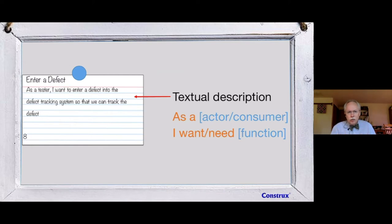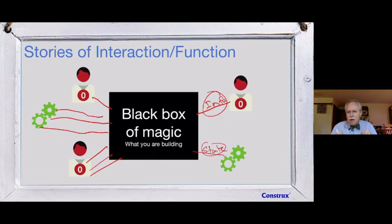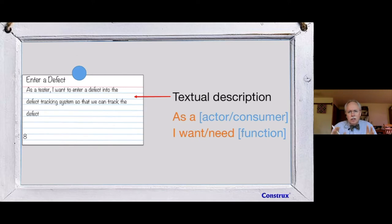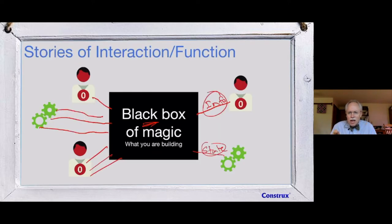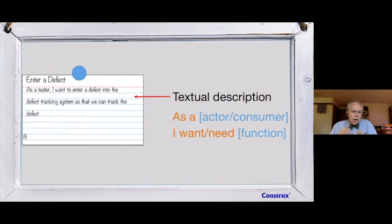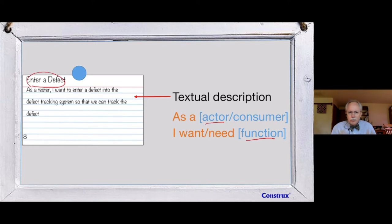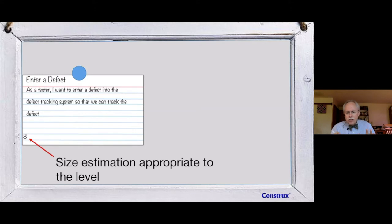The next thing on the front is the textual description. Originally it was a free-form text field, but too many people described what was inside the black box rather than the interactions. So we use the format: 'As a [actor], I want to [do this thing].' This captures who the actor is and what they're doing outside the black box — also reflected in that verb-noun name.